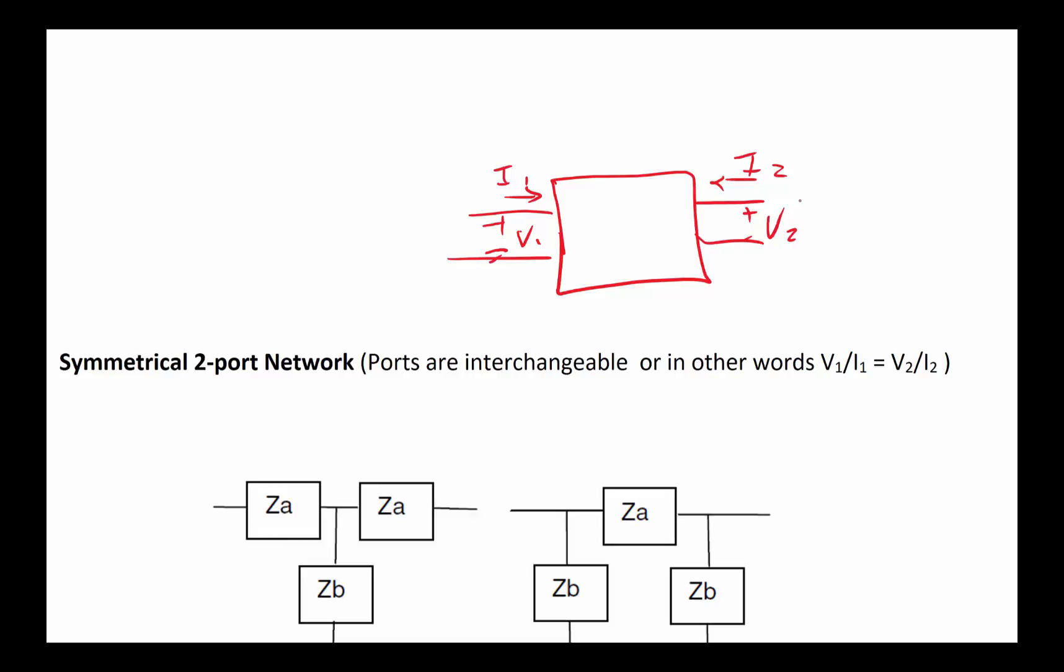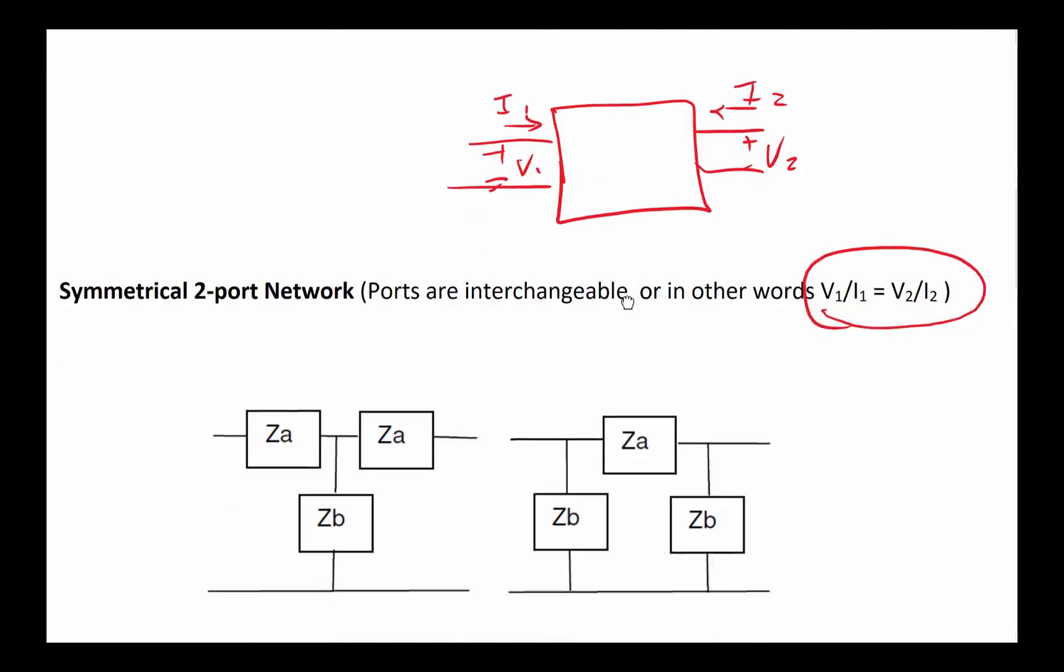If I have a voltage and current at V1, I'm going to get something at I2 and V2. If I were to put that same voltage across V2 and I2, I'll get the same I1 and V1 that I was getting before. So basically it's saying V1 over I1 is equal to V2 over I2.